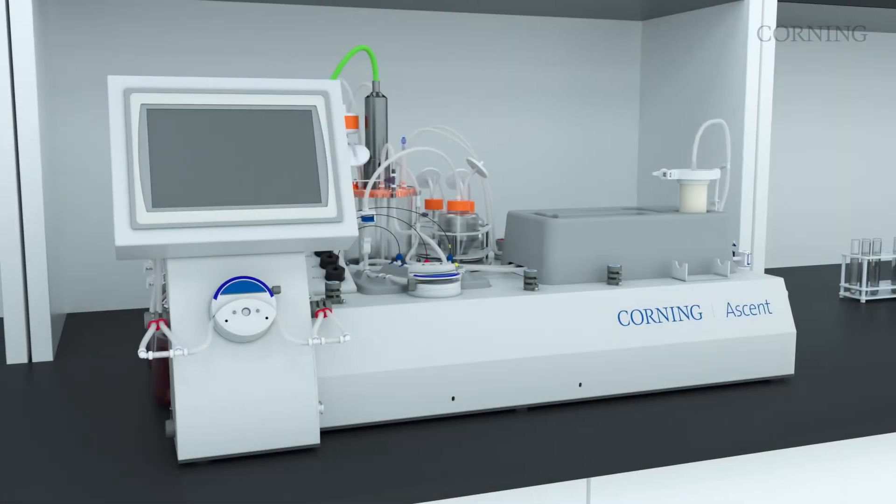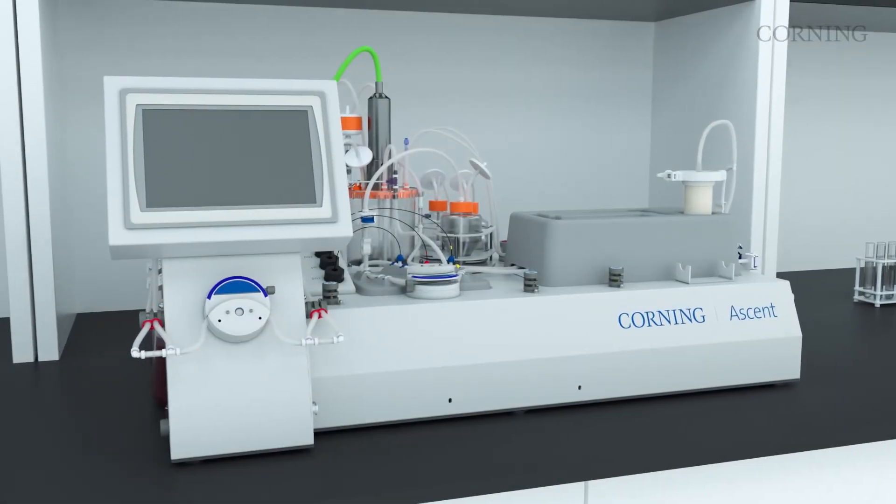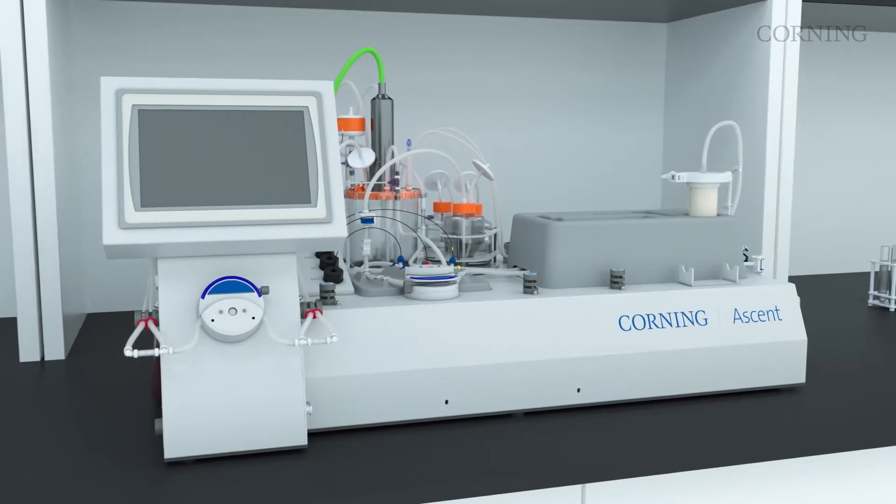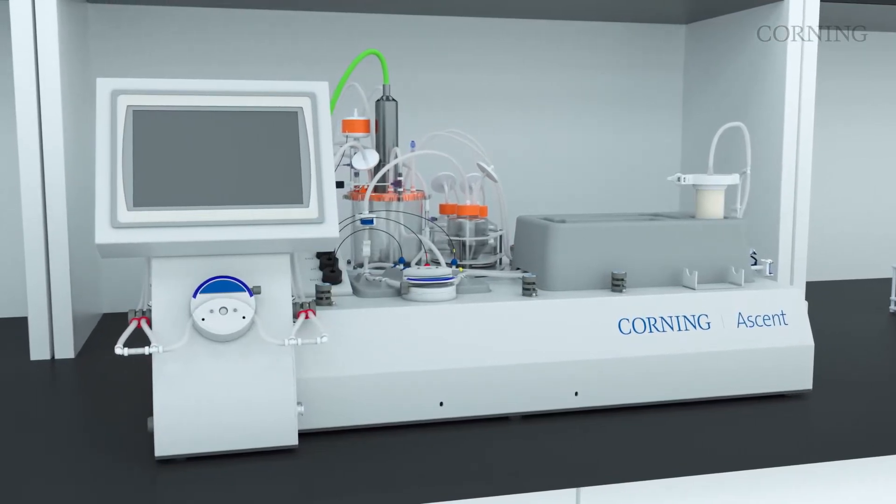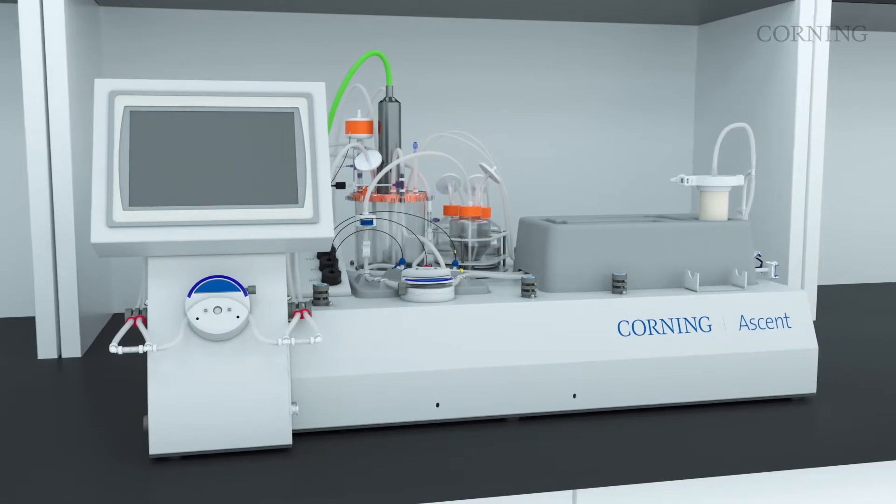The Ascend FBR system is an automated closed system bioproduction platform with inline monitoring and lot traceability for CGMP production needs.